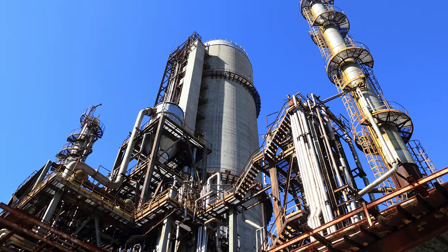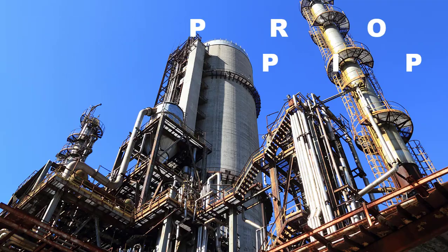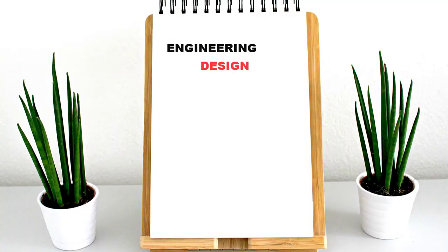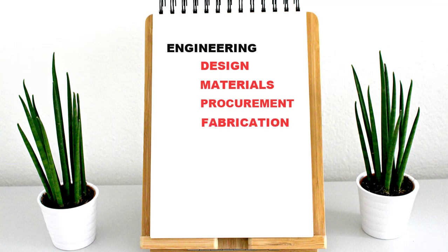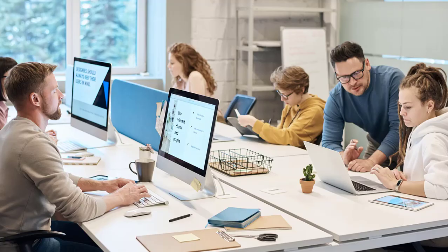But we should understand one thing before getting into the video. The engineering of process piping is an integrated activity which involves design, materials, procurement, fabrication, inspection, testing, and construction. So various engineering disciplines and people from different engineering backgrounds work together in a project.